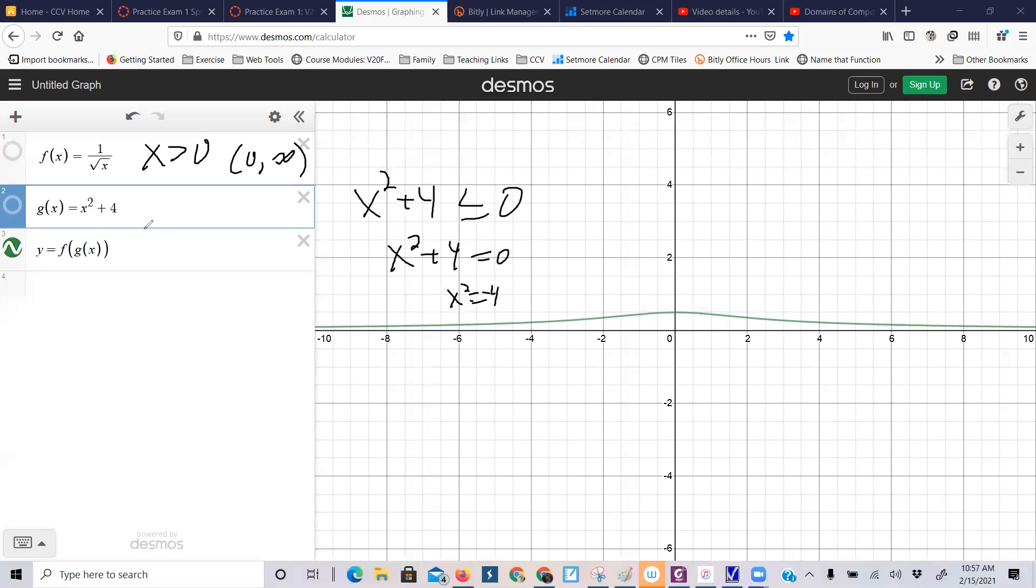and if you think about this being a parabola, it's been shifted up four, that graph will never be negative also, right, so that's why we're not seeing any vertical asymptotes in this graph, it's just coming along and it's looking fine, because it's not undefined anywhere,